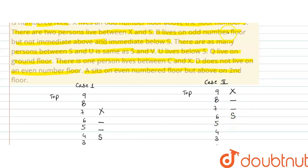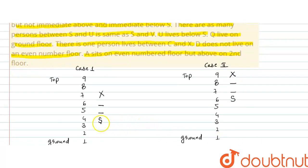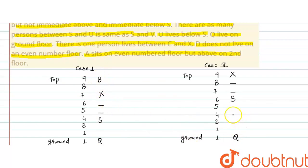B lives on odd number floors but not immediately above or immediately below S. B के लिए जो positions vacant हैं वो 9 और 1 हैं। Q lives on the ground floor — मतलब Q जो है first floor पे होगा। यहाँ पर भी Q first floor पे होगा। B की position Case 1 में 9th floor पे होगी। Case 2 में B के लिए जो position vacant है वो 3 है — S के ऊपर-नीचे नहीं हो सकता और odd number में होना चाहिए — तो B की position 3rd floor पे होगी।